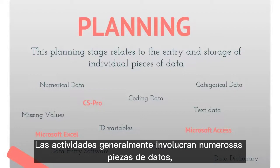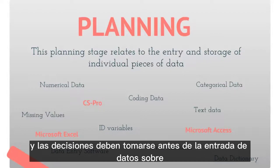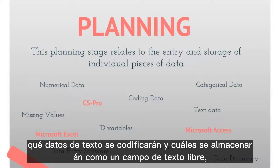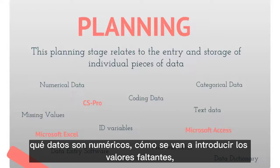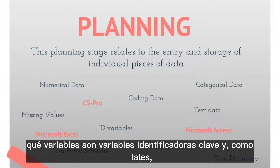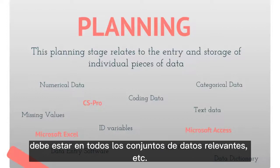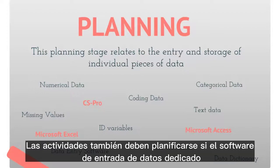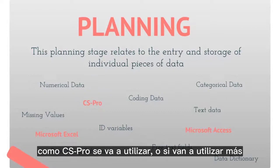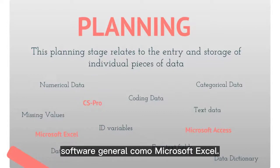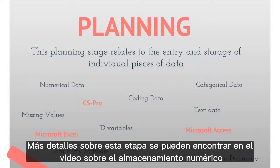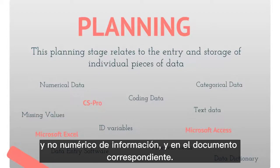Activities usually involve numerous pieces of data, and decisions need to be made prior to data entry about which text data is going to be coded and which is going to be stored as a free text field, which data are numerical, how missing values are going to be entered, and which variables are key identifier variables that need to be on all relevant data sets. Activities also need to plan if dedicated data entry software such as CS Pro is going to be used, or if they are going to use more general software such as Microsoft Excel. More details can be found in the storing numerical and non-numerical information video and the corresponding document.